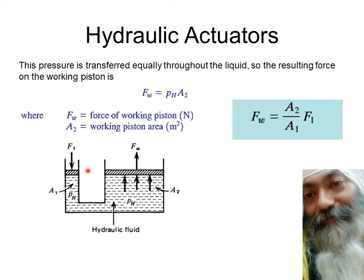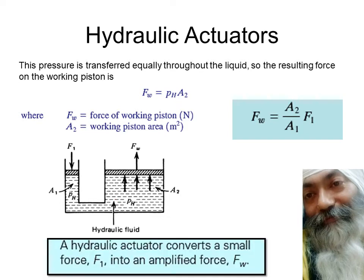For example, suppose both pistons are circular plates and the larger plate has a diameter 10 times that of the smaller one. The area of the larger plate will be 100 times the area of the smaller one, so whatever force you apply will get multiplied by 100 times. If you apply a force of 10 kilogram-force, you will get an output of 1000 kilogram-force — enough to lift cars, even trucks. This is the hydraulic actuator principle, which converts a small force F1 into an amplified force Fw.